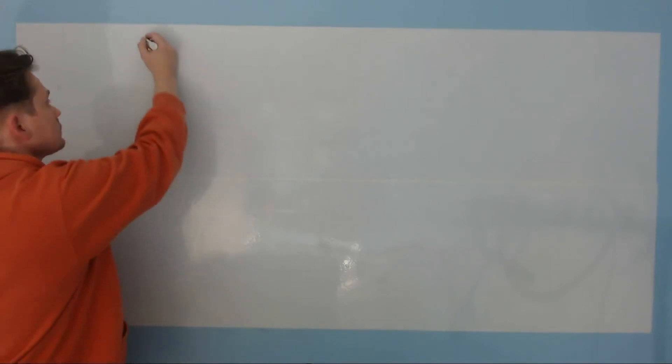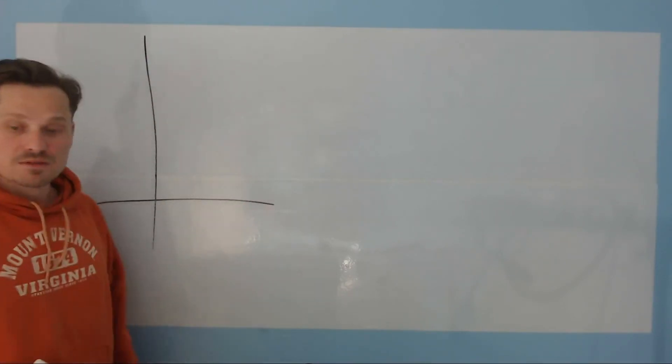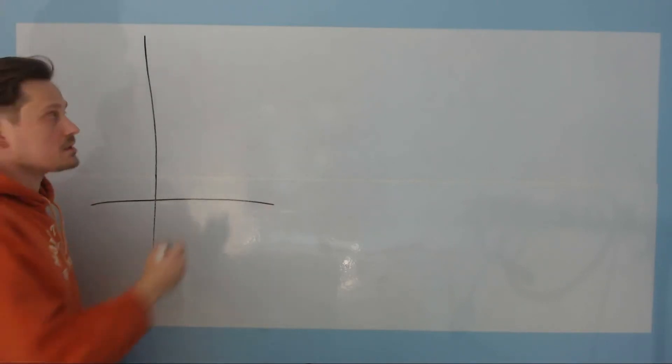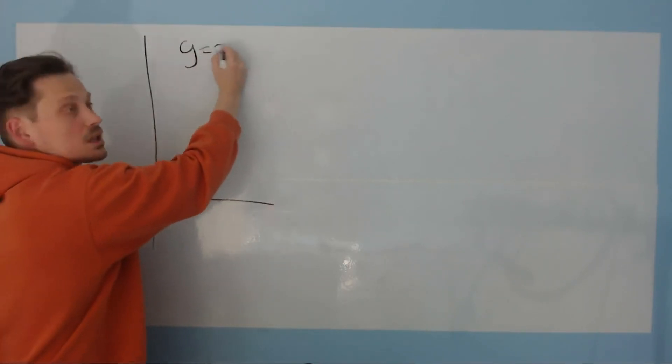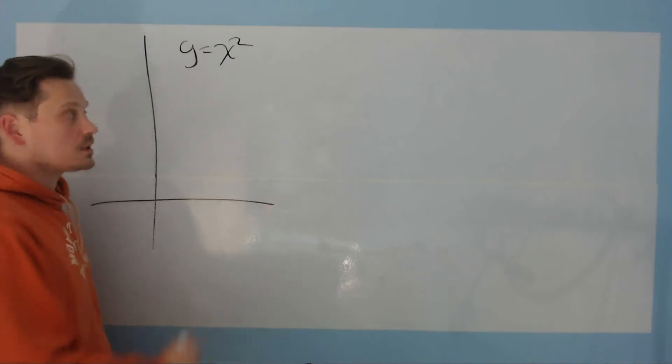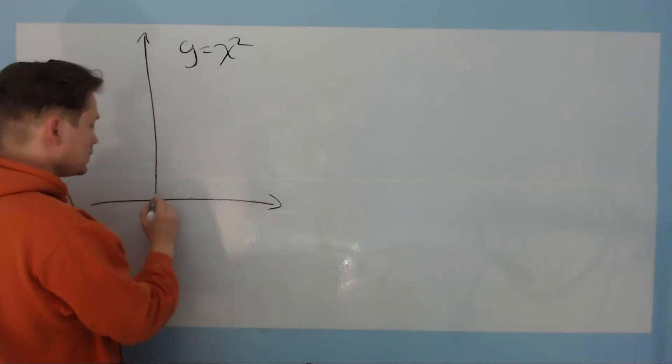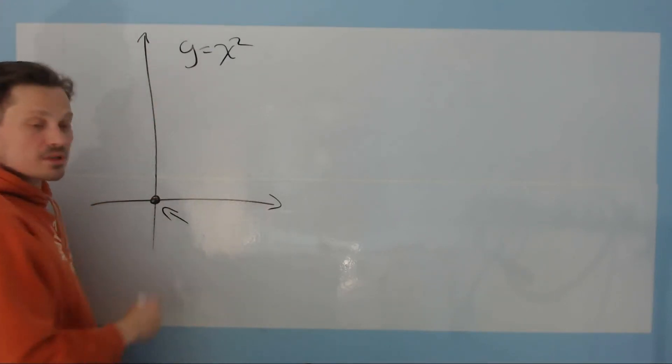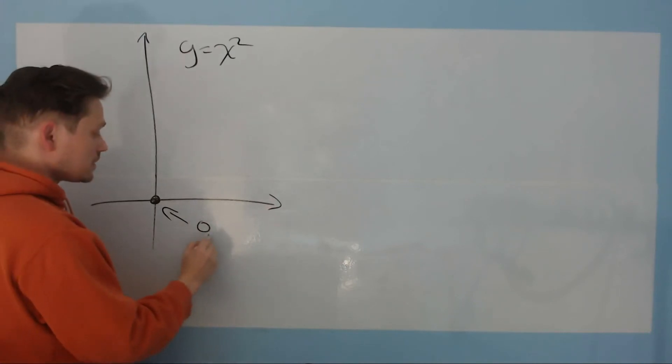I'm going to begin here with a pretty rough sketch of x squared. So this is y equals x squared, just like that. This is our, this point, remember, is 0, 0.